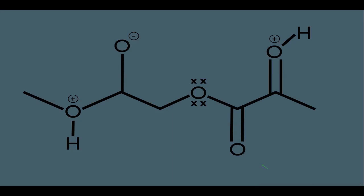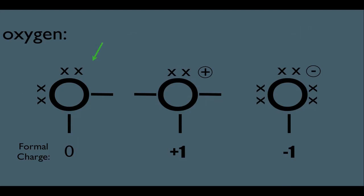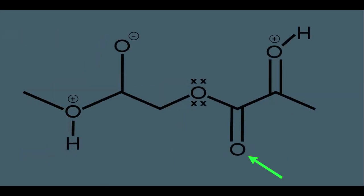Let's do the same analysis with this oxygen right here. Notice it doesn't have a formal charge listed. So again, we assume it has two bonds and therefore two lone pairs. Going back, it has two bonds, but those two bonds are together in one double bond. That's okay — we count that as two bonds, which means it would also have two lone pairs like the other oxygen.